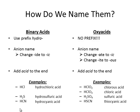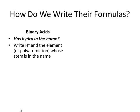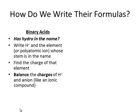Now we're going to go the other way — starting with names and getting formulas. For binary acids, we know it's a binary acid because the name has 'hydro' in it. So we write H+, and the element — or in the case of cyanide, the polyatomic ion — whose stem is in the name. Once we find that, we get the charge of that element or ion based on the -ide ending. We balance the charges of H+ and the anion like an ionic compound and write our final formula.